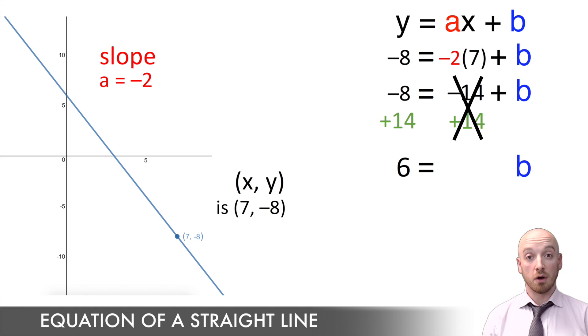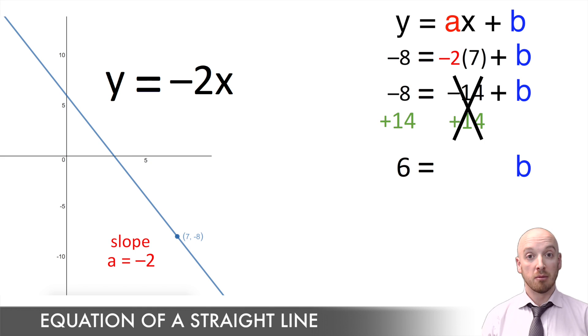And now that I've solved for b and I can see its value is six, I can write out the equation of that line and define it perfectly. And it's gonna be y equals negative two x plus six. Negative two is the slope and positive six is the y-intercept.